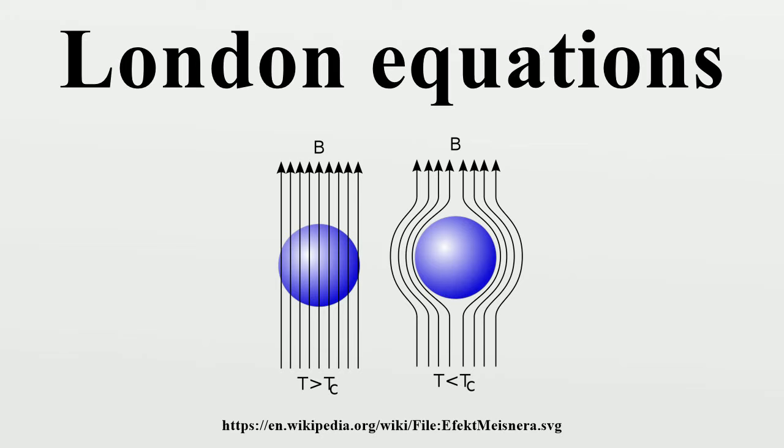Canonical momentum arguments: It is also possible to justify the London equations by other means. Current density is defined according to the equation, taking this expression from a classical description to a quantum mechanical one. We must replace values J and v by the expectation values of their operators.